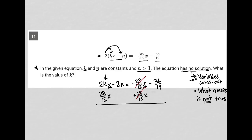Giving me 2kx plus 28/15 x. I would probably also add 2n to both sides just to get them away from the x.